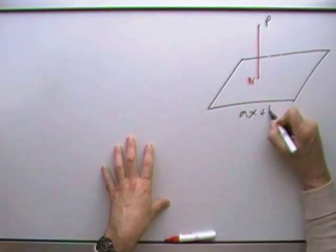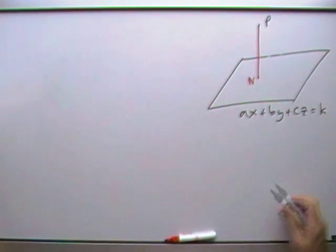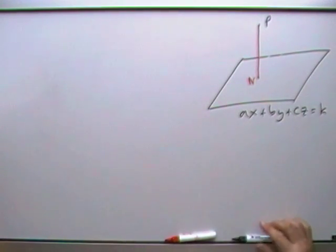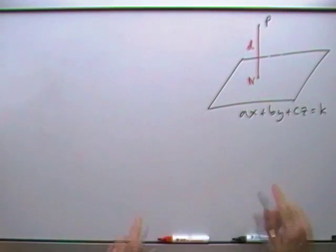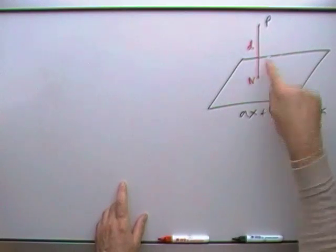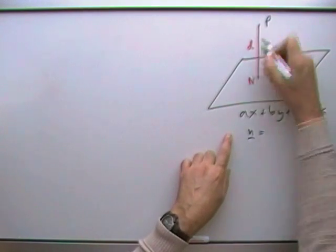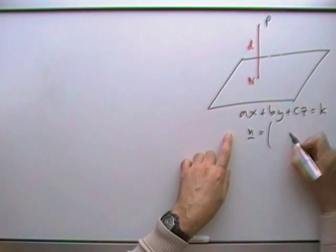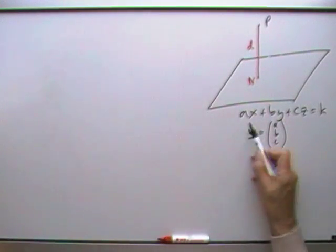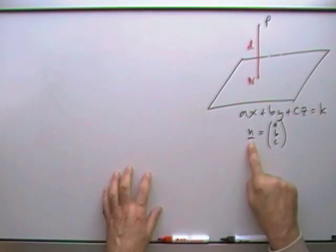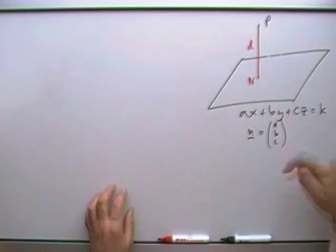Give this plane a name. This is the plane AX plus BY plus CZ equals some constant K for all points lying on it. The components of the normal vector are the same as those coefficients A, B, C. So this vector, or any multiple of it, lies in that direction — or negatives in the opposite direction.